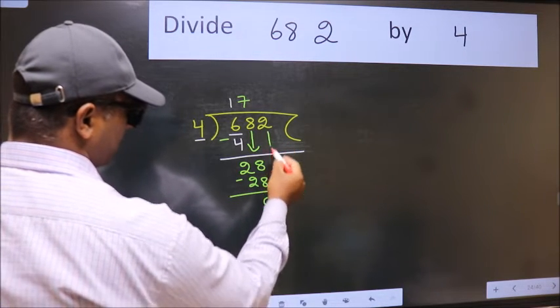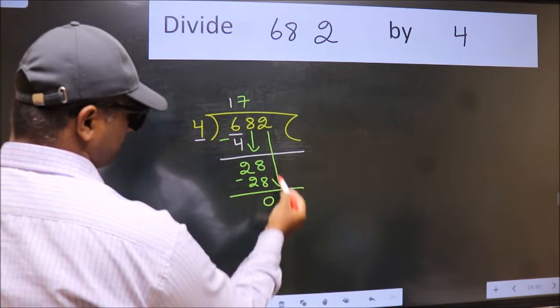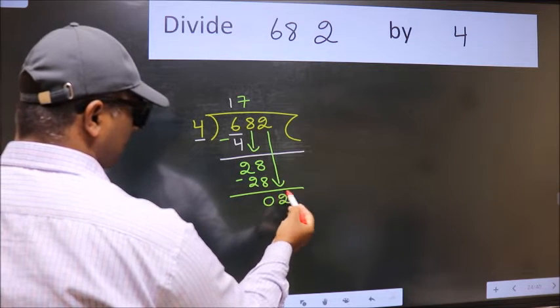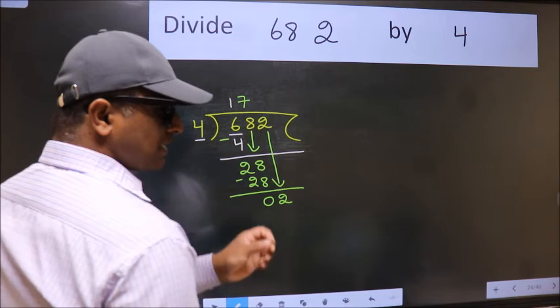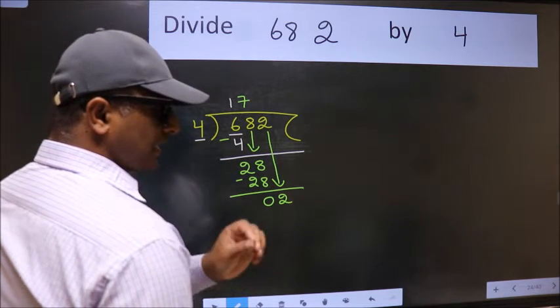After this, bring down the next number. So 2 down. After this step, the mistake happens and the mistake is this.